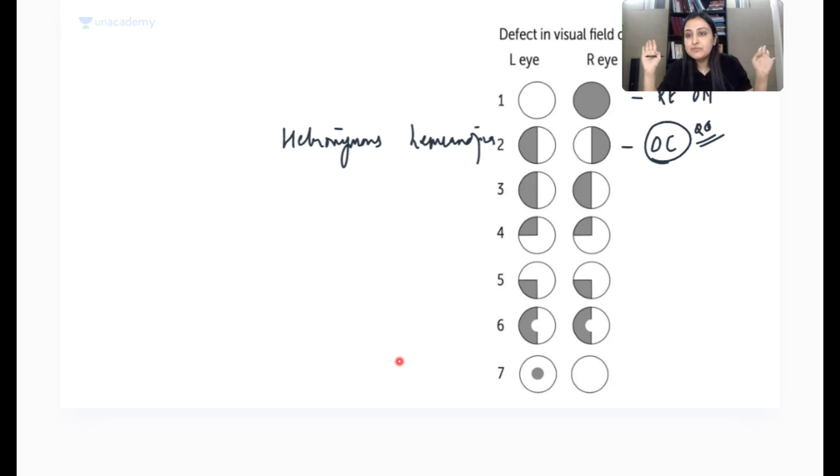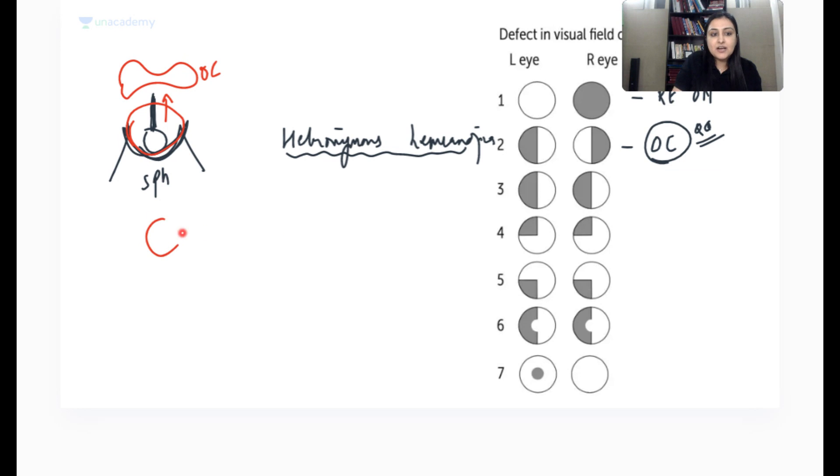And it's always ulta. Nasal fibers ka defect hai, means temporal field jayega. Neeche ka defect hai, means upar ka jayega. Upar ka defect hai, neeche ka jayega. So it's always the deficit is going to be opposite to the lesion. Always in the eye. That is the main concept. Now, further, because all of you answered this for optic chiasma, because the nasal fibers are crossing, bitemporal hemianopia hai. Tell me something. In the sella, this is the pituitary sella. Yaha pe sphenoid sinus hai. Sella turcica means Turkish saddle, right? Yaha pe pituitary hai. Pituitary stalk hai. And there I have the optic chiasma. Now, tell me something. A pituitary adenoma is there. It is going to compress on the chiasma from below or from the top. It's going to compress from below.